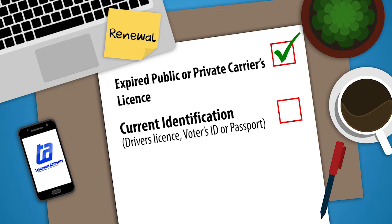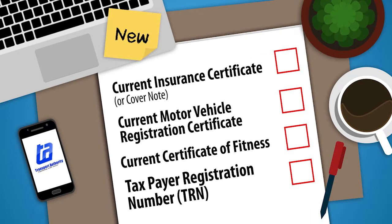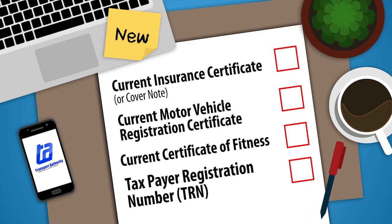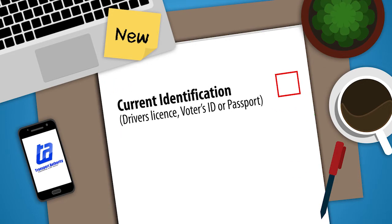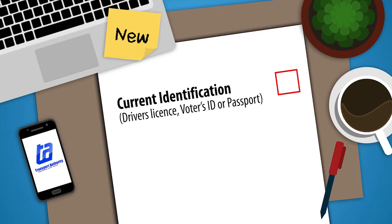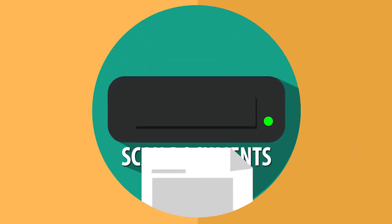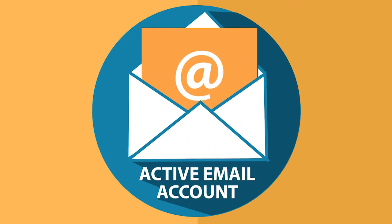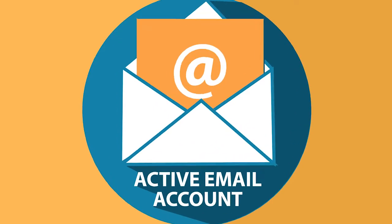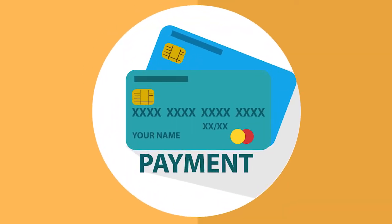Also required: Current identification, whether it's your driver's license, voter's ID, or passport. For new private or public commercial carriers: Current Insurance Certificate or Cover Note, Current Motor Vehicle Registration Certificate, Current Certificate of Fitness, Taxpayer Registration, and current identification. These documents will need to be scanned. Additionally, you must have an active email account and a credit card or Visa debit card for payment.